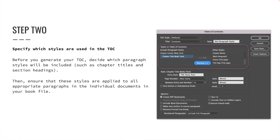Before you generate your TOC, decide which paragraph styles will be included — such as chapter titles and section headings — and ensure those styles are applied to all appropriate paragraphs in every document in your book file. In this lesson we will create a table of contents for a book file; however, the same concept applies to a single document. The difference is that you would add a new page for the TOC at the beginning of the document rather than creating a separate file.